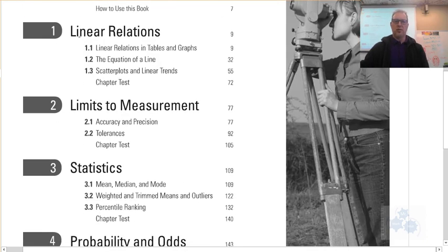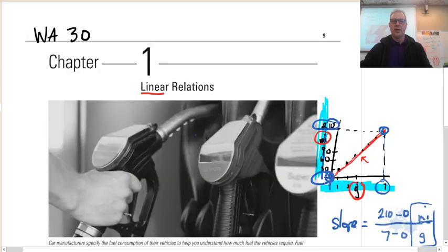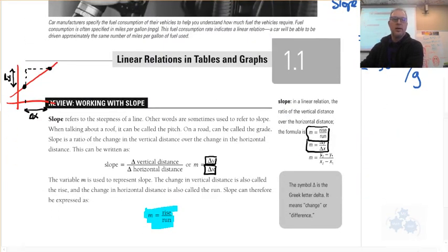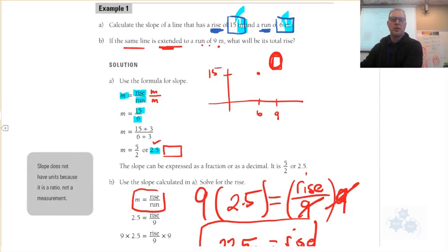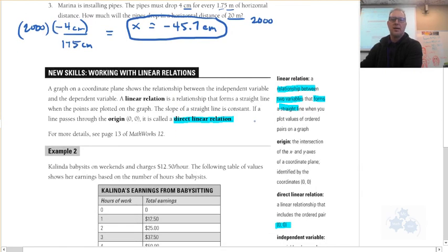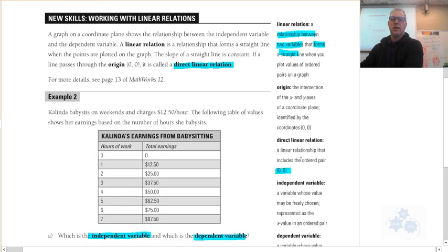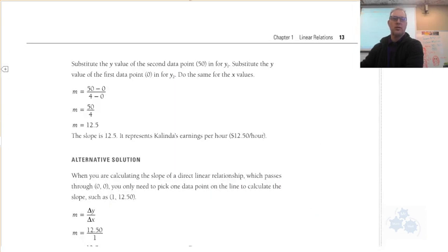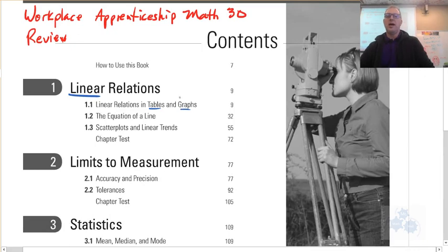So in Chapter 1, we talked about linear relations. We talked about sketching lines, putting our data into tables and graphs. This was the very first lesson where we reviewed slope and that sort of thing. I think we did y equals mx plus b for the equation of a line. We talked about direct relationships, where you have a straight line, a direct linear relation. And then we also talked about an indirect relation as well. So the equation of a line, y equals mx plus b, you need to remember that.